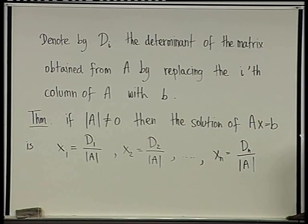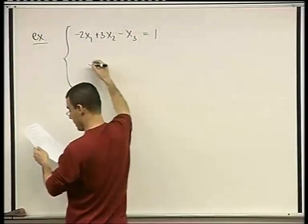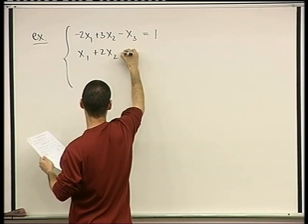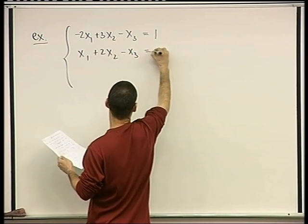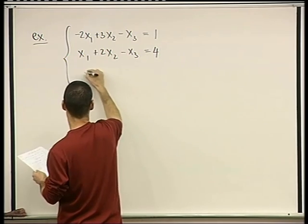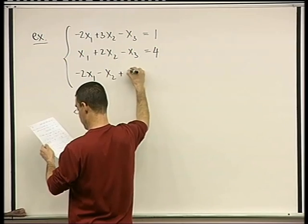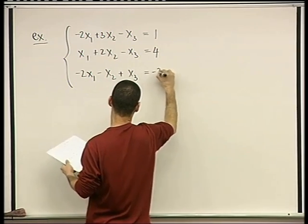So let's do this. Example. So here's the system. Minus 2x1 plus 3x2 minus x3 equals 1. x1 plus 2x2 minus x3 equals 4. And minus 2x1 minus x2 plus x3 equals negative 3.